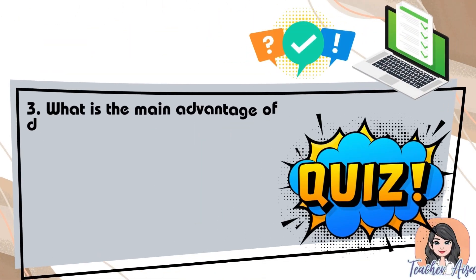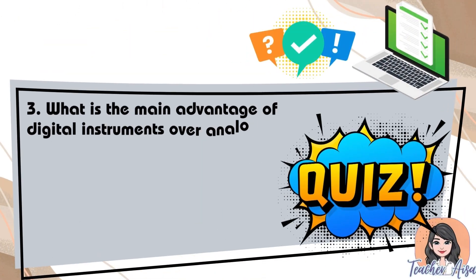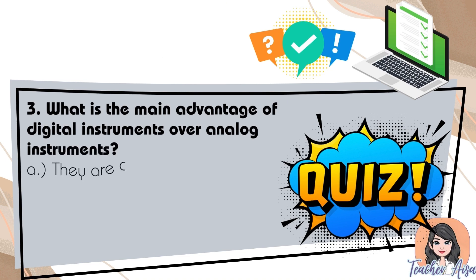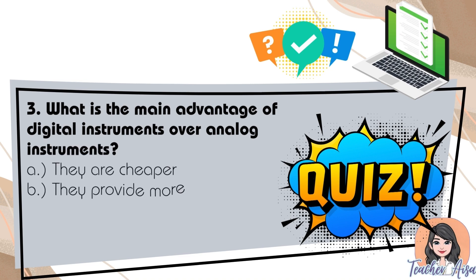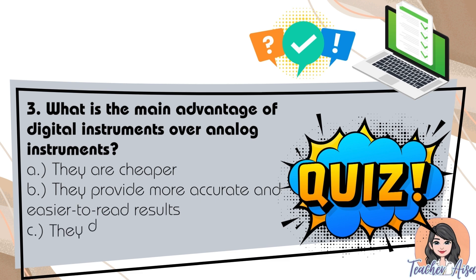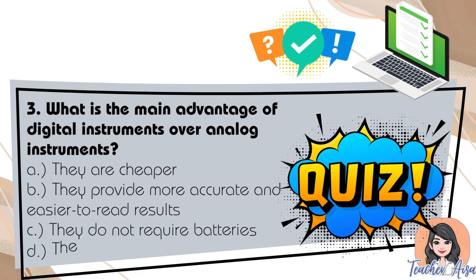Question three: what is the main advantage of digital instruments? A. they are cheaper, B. they provide more accurate and easier to read results, C. they do not require batteries, D. they do not need calibration.